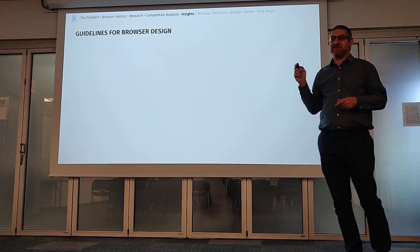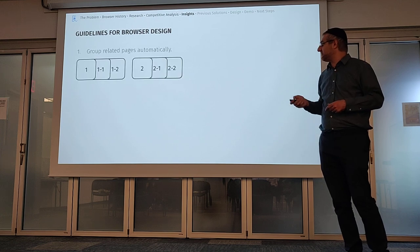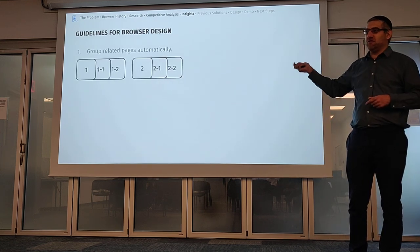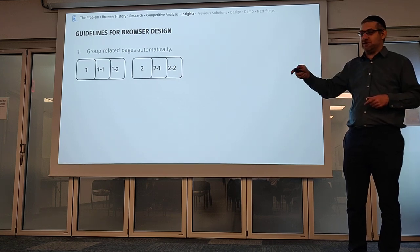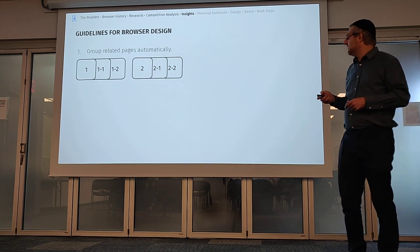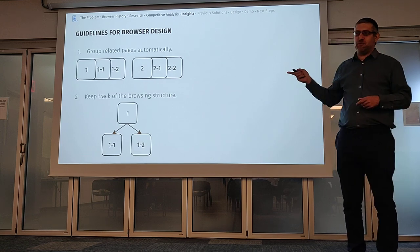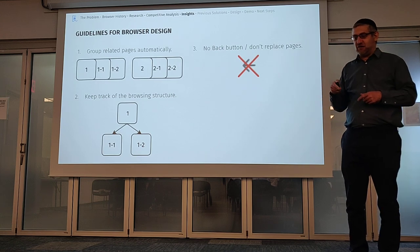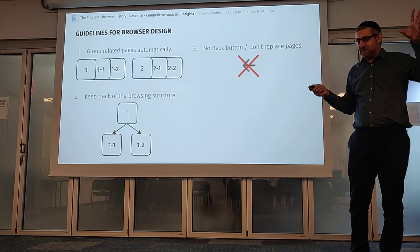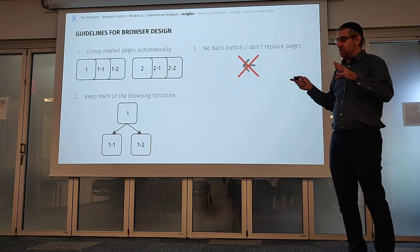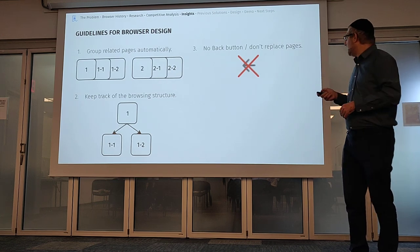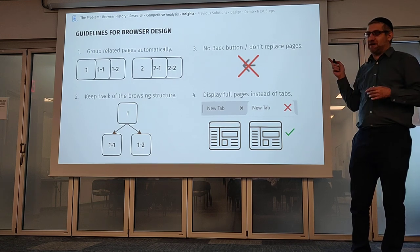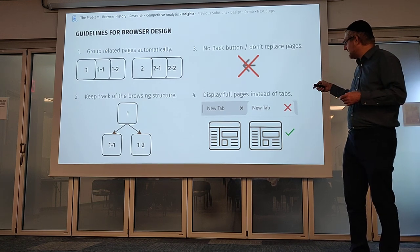So I came up with guidelines for browser design. First, group related pages automatically — no manual organization like almost all those other competitors. Second, keep track of the browsing structure — it's very important. No back button replacing pages and hiding them in history. If you see a page, that is the page. And finally, instead of showing paths that make it hard to find things, show the actual pages themselves.